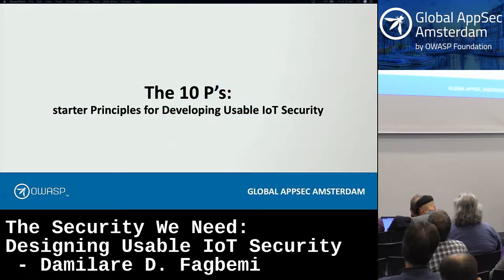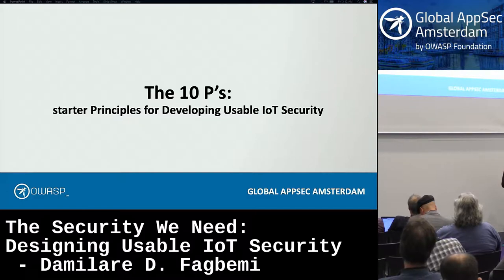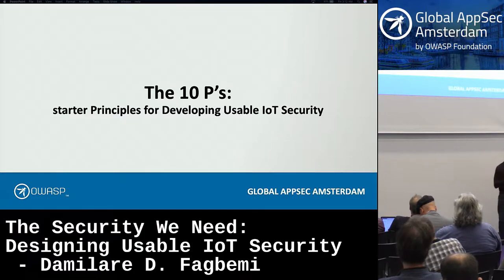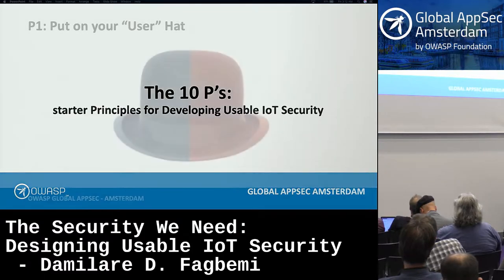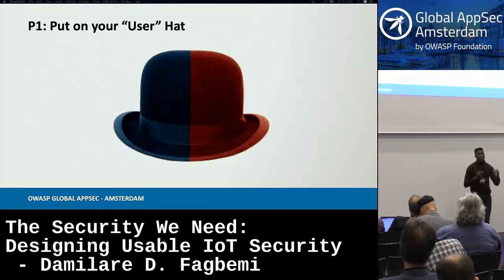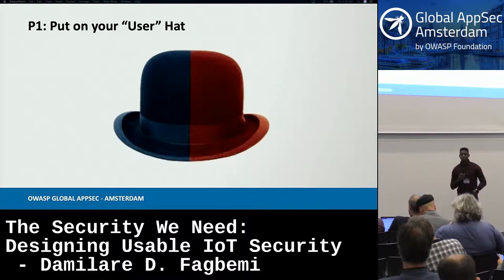That takes us into what I call the Ten P's — principles for secure design, specifically speaking to usability for secure IoT design. The first principle is to put on the user hat, which means remembering all the things we talked about — for instance, security perhaps not being the most important thing for the user of this product.